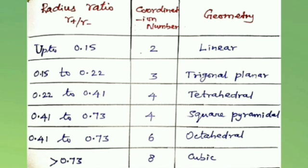For radius ratio up to 0.15, the coordination number is 2 and the geometry is linear. Radius ratio 0.15 to 0.22 has coordination number 3 and trigonal planar geometry. Radius ratio 0.22 to 0.41 has coordination number 4 and tetrahedral geometry.